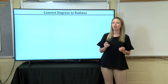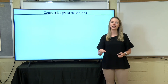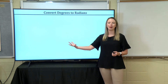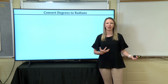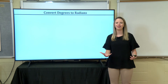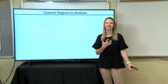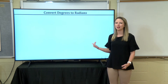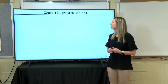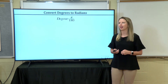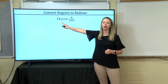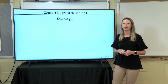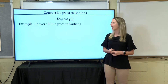Just like we can translate anything written in French or Spanish into another language, or convert Fahrenheit to Celsius, we can take any degree measure and represent it as a radian. To do that we're going to use a formula: take your degree measure and multiply it times pi divided by 180. Let's see what that looks like.